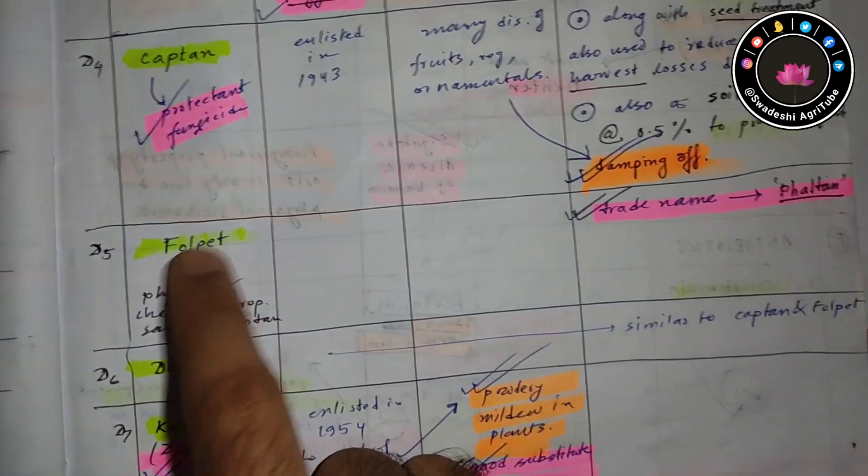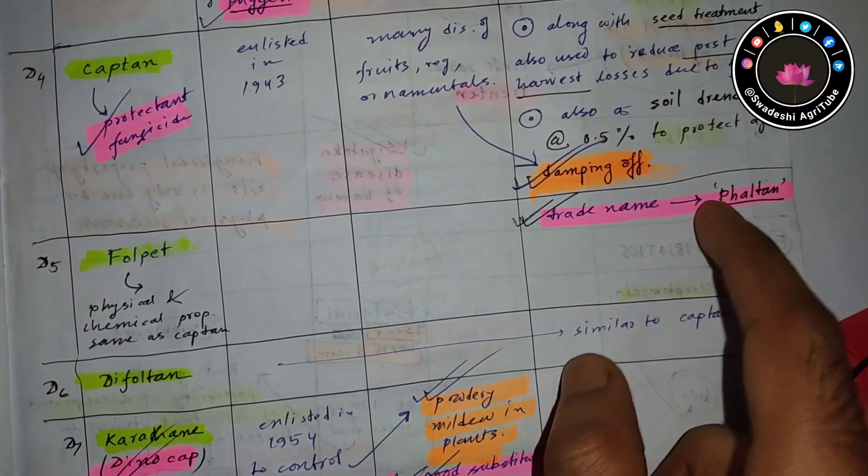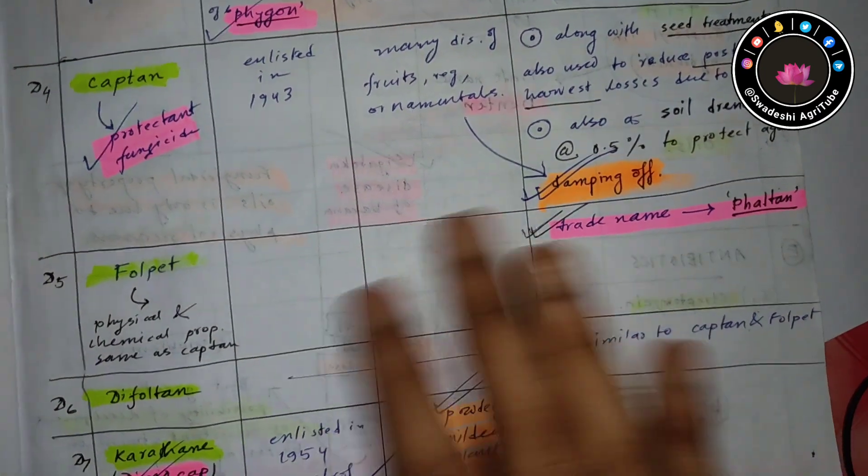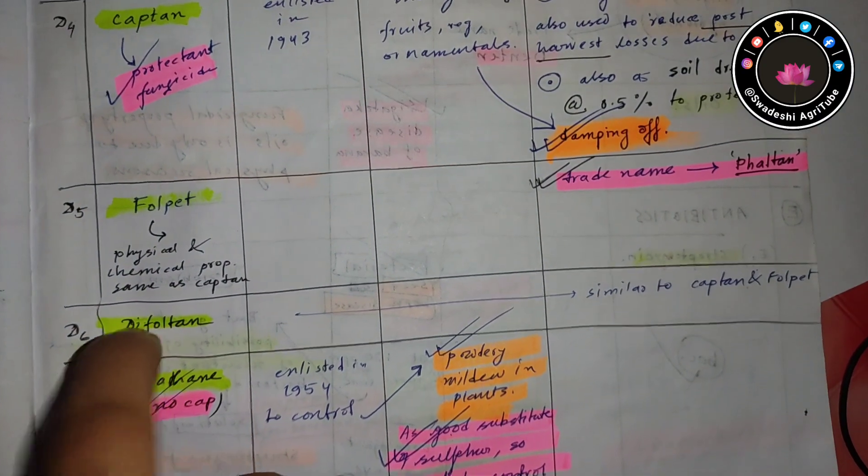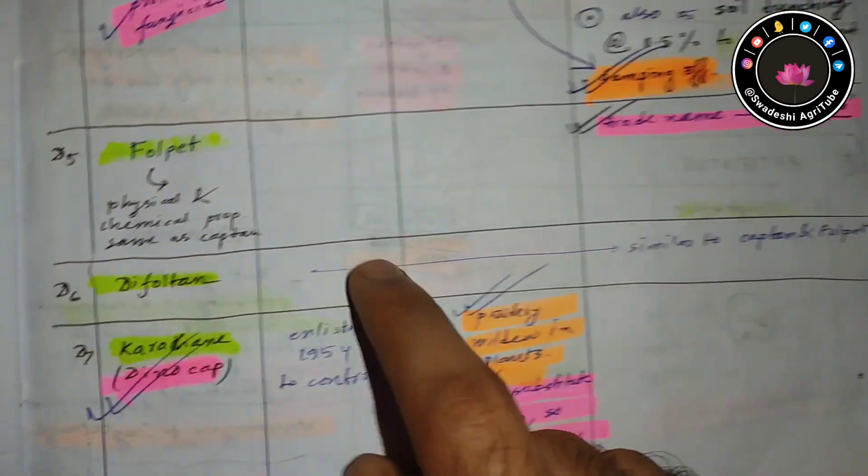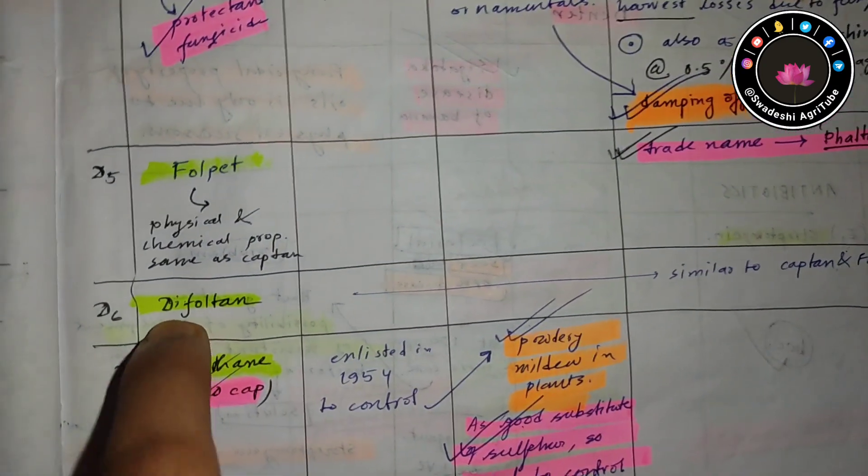The fifth one is folpet. Folpet's trade name is Faltan. There is nothing more to read about this—just remember the name folpet and its trade name Faltan, and that's it.